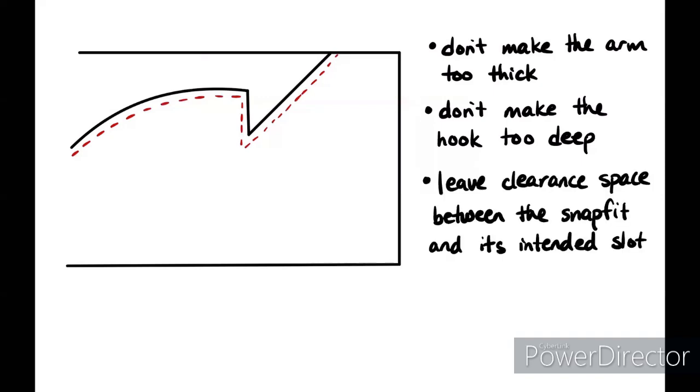Lastly, leave clearance space between the snap fit and its intended slot. 3D printers aren't perfect. So give it a little bit of space and don't try to do a perfect match. It's not going to turn out well. It'll probably end up being a little squished and you won't be able to get a perfect fit.